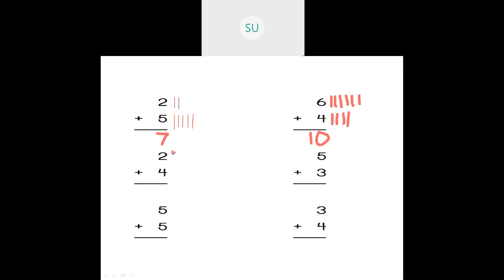Two plus four: draw two tally marks, then four more. Count them: one, two, three, four, five, six. Two plus four is six. Then five plus three: draw five tally marks, then three more. Count: one, two, three, four, five, six, seven, eight. So five plus three is equal to eight.